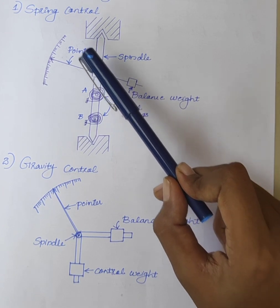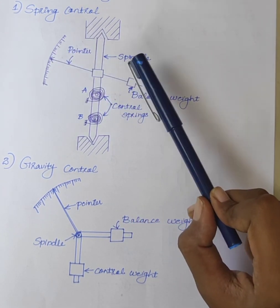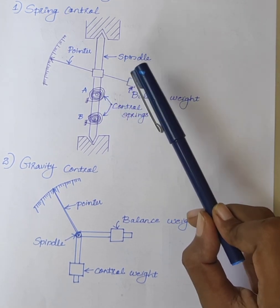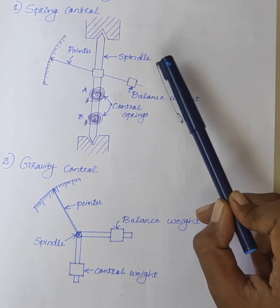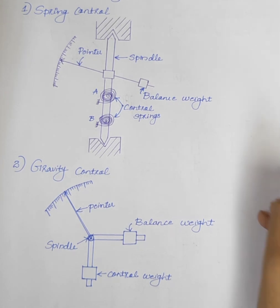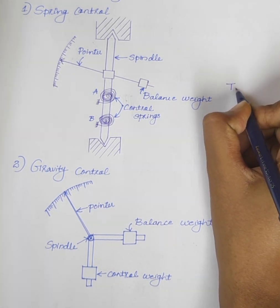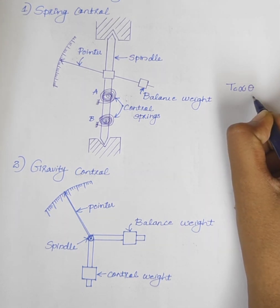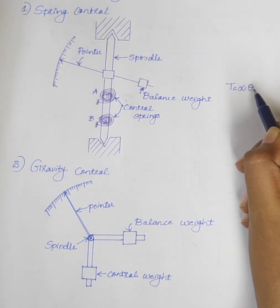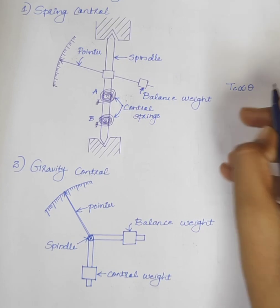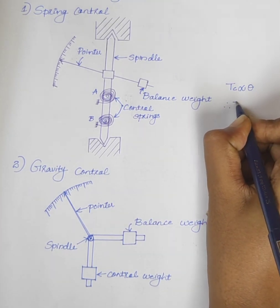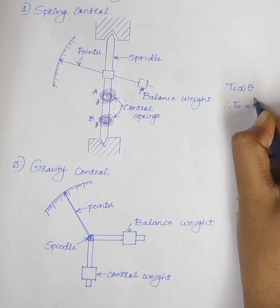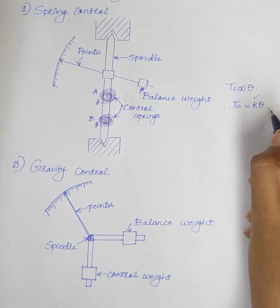The pointer comes to rest when Td is equal to Tc — when deflecting torque becomes equal to controlling torque. With spring control, the controlling torque Tc is proportional to Theta, where Theta is the angle of deflection of the moving system. Therefore, we can write Tc is equal to K into Theta, where K is the spring constant.